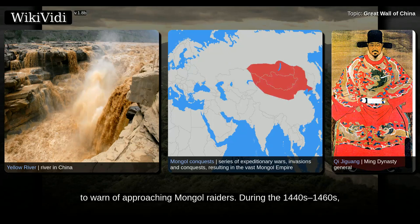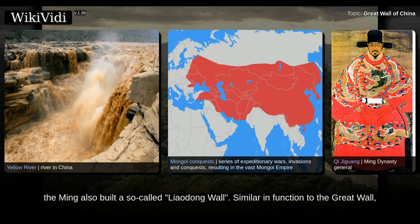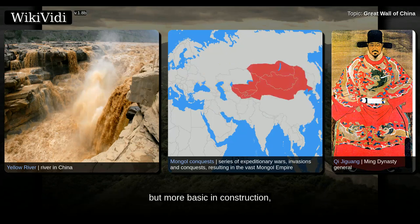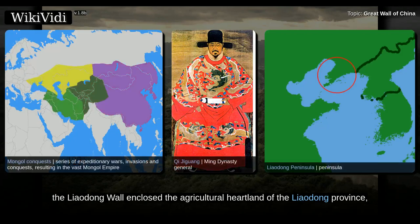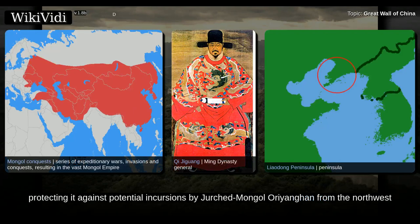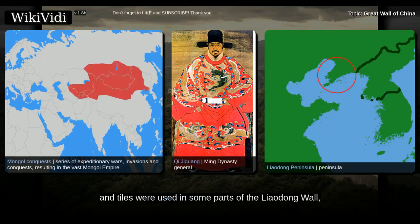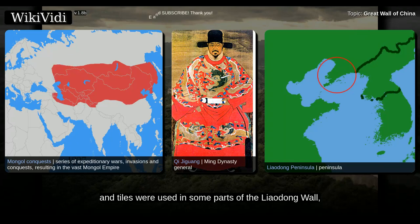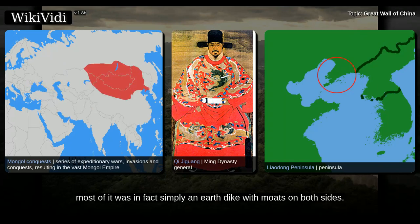During the 1440s–1460s, the Ming also built a circle called the Liaodong Wall, similar in function to the Great Wall but more basic in construction. The Liaodong Wall enclosed the agricultural heartland of Liaodong Province, protecting it against potential incursions by Jurchen-Mongol-Oriangs from the northwest and the Jianzhou Jurchens from the north. While stones and tiles were used in some parts of the Liaodong Wall, most of it was in fact simply an earth dike with moats on both sides.